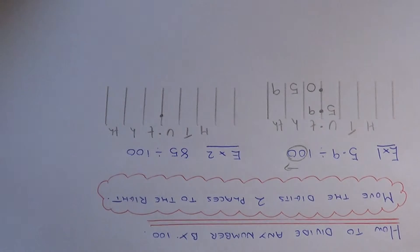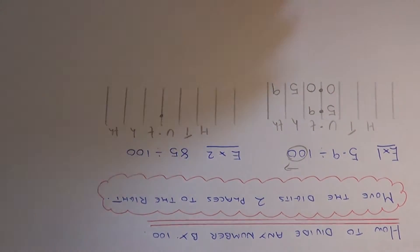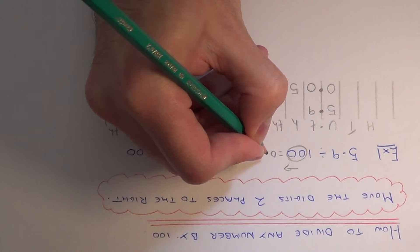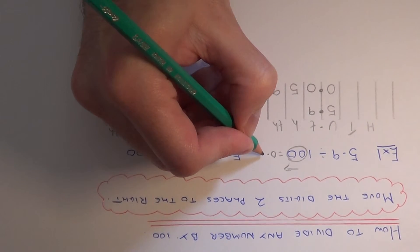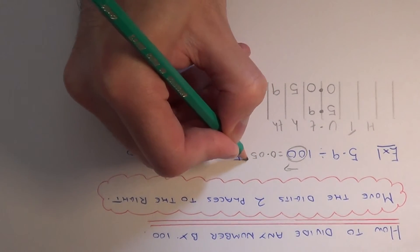You should always put a 0 before the decimal point as well. Let me write this down off the column: 0.059.